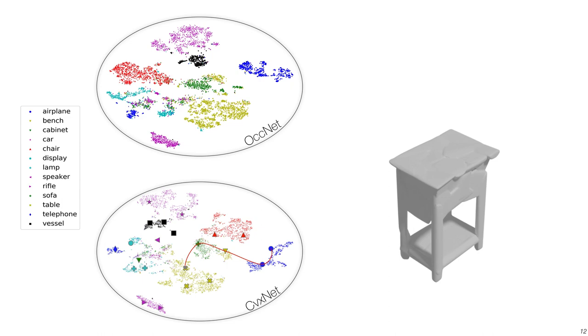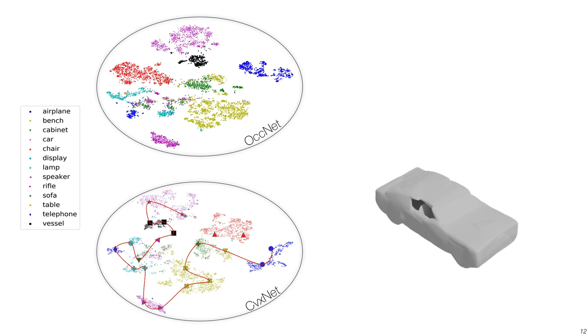Here, we visualize the t-SNE plot of ConvexNet. We also showcase the interpolation of geometry in the ConvexNet latent space. Note that shapes can be interpolated smoothly even across different object classes.